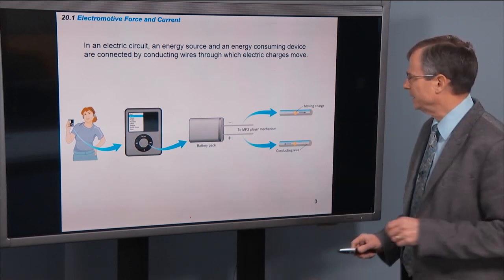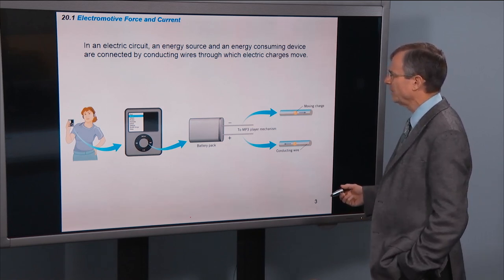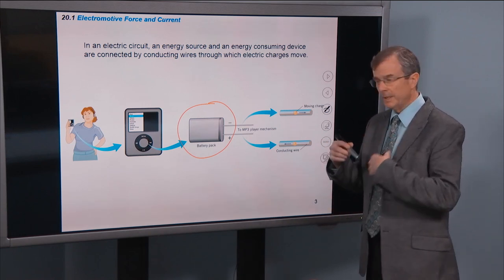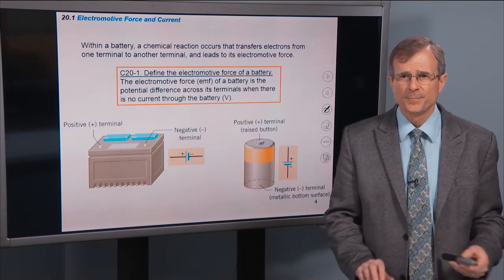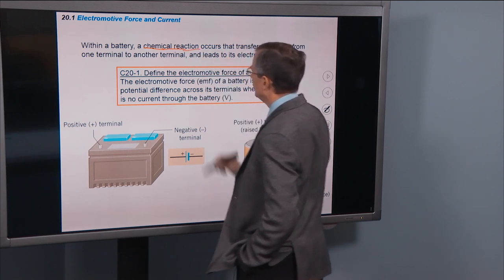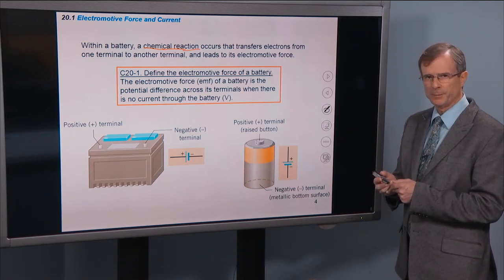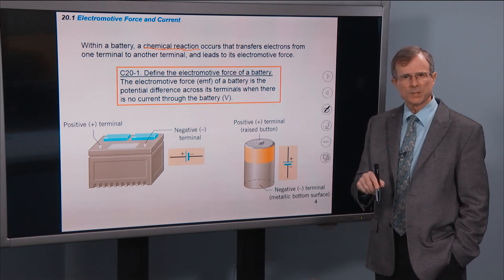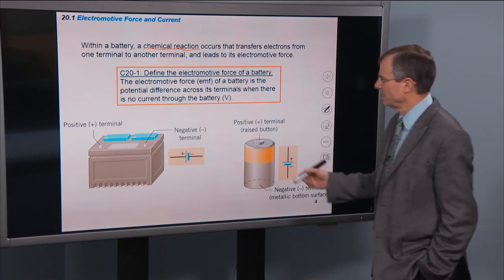In an electric circuit, an energy source and an energy-consuming device are connected by conducting wires. A source in this case would be a battery pack, and then electric charges move through the wires that power the device. Within a battery there are chemical reactions, and this chemical reaction transfers electrons from one terminal to the other. You always have two terminals — a positive and a negative — and this transfer of charge leads to what's known as the electromotive force.